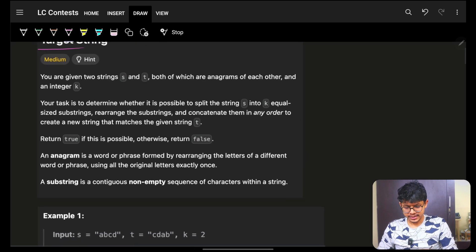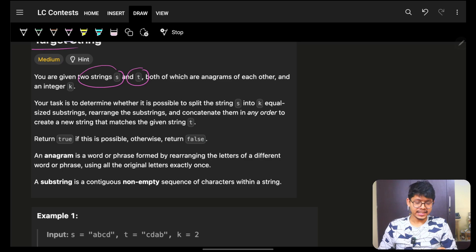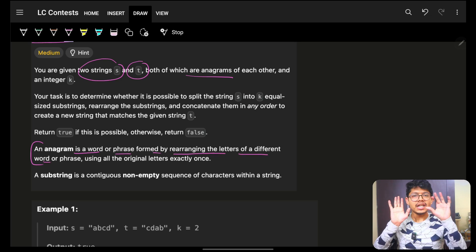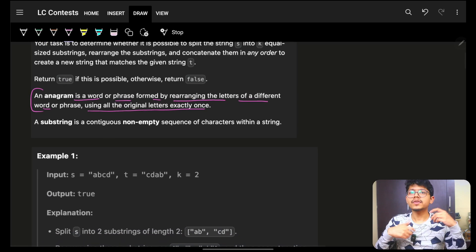Rearrange K substrings to form the target string. It is simply saying that you are given two strings, S and T, and both are anagrams. Anagrams, they have mentioned what anagrams are. Anagrams is a word or phrase formed by rearranging the letters of a different word or phrase, which ultimately means that characters are same. Characters, count of characters are same.